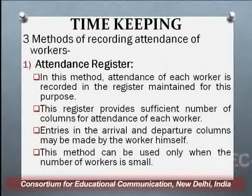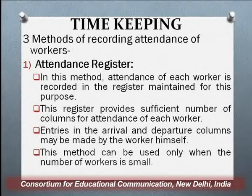How do you have a record of the attendance of the worker? One traditional method is the attendance register, which almost all of us are familiar with. There is an attendance register in each organization, especially in small organizations. This attendance register system is not very suitable for a very large organization with thousands of workers. In this method, attendance of each worker is recorded in a register maintained for this purpose, providing sufficient columns for the attendance of each worker.